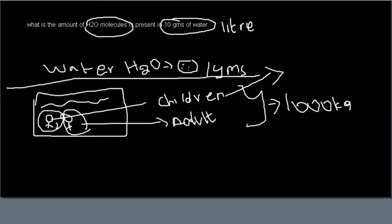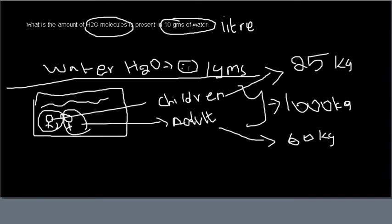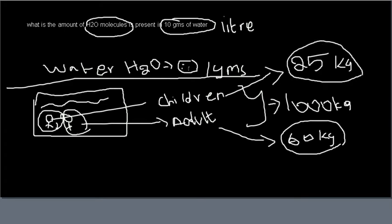Children comparatively have a lower mass than adults. Let's assume the average mass per child is 25 kilograms, and the average mass per adult is 60 kilograms. Together, the children and adults make up a total of one thousand kilograms. We're not sure how many people are there — all we know is child weight averages 25 kg and adult weight averages 60 kg, and together they total one thousand kilograms.